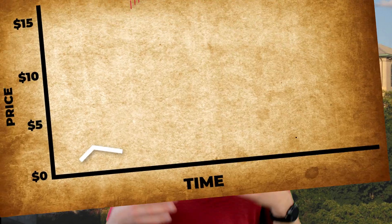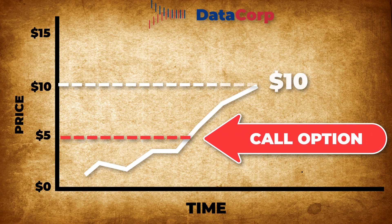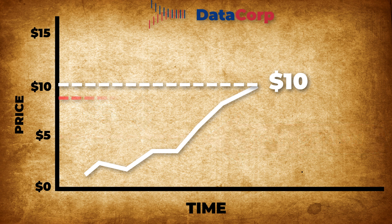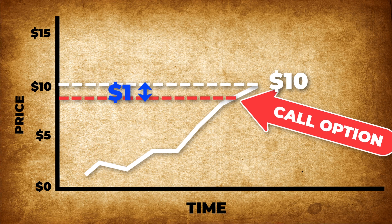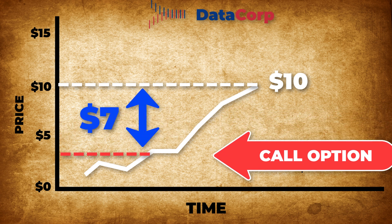For a call option, the lower the strike price relative to the price of the underlying stock, the more valuable the contract. For example, if the contract is to buy Datacorp at $5 per share but Datacorp stock is currently trading at $10, well that contract is worth at least $5 per share. On the other hand, if the contract is for buying Datacorp stock at $9 per share, the contract is worth much less since the strike price is much closer to the price of the underlying stock. As the gap between the strike price and the price of the underlying stock changes, so does the value of the call option — smaller gap means lower value, bigger gap means higher value.